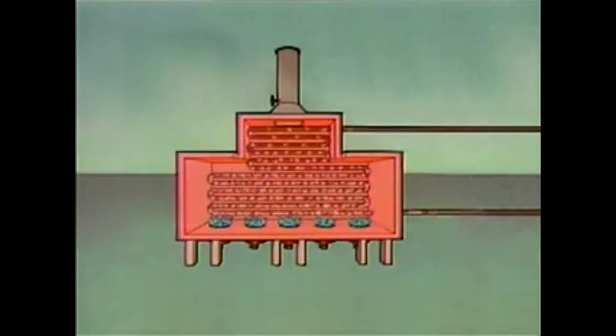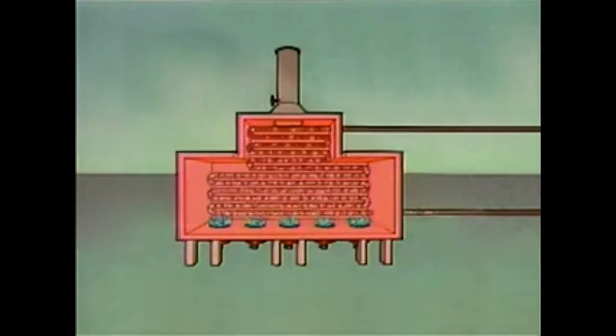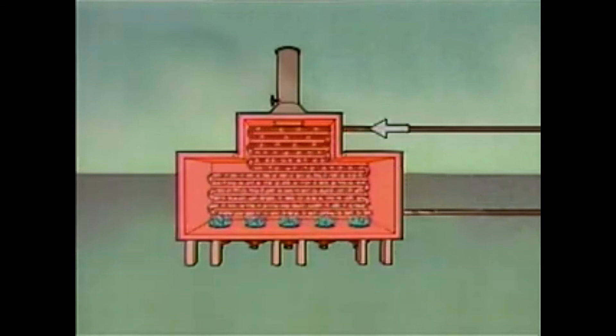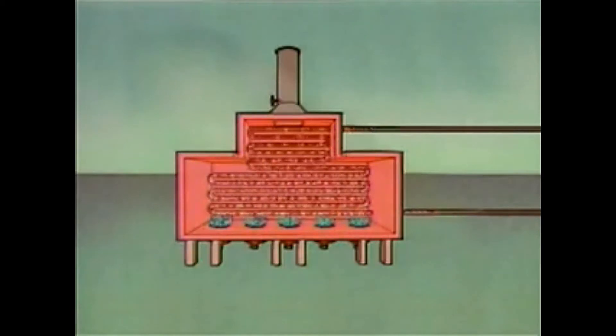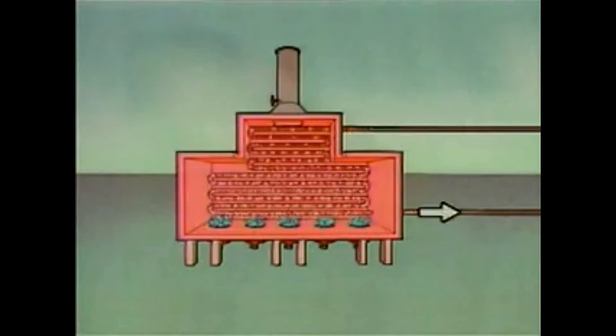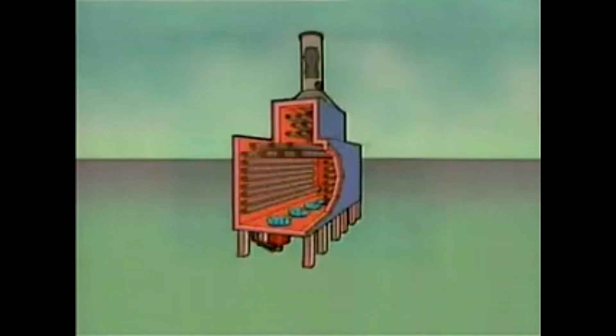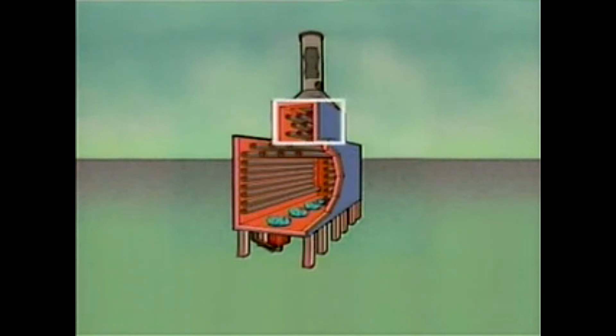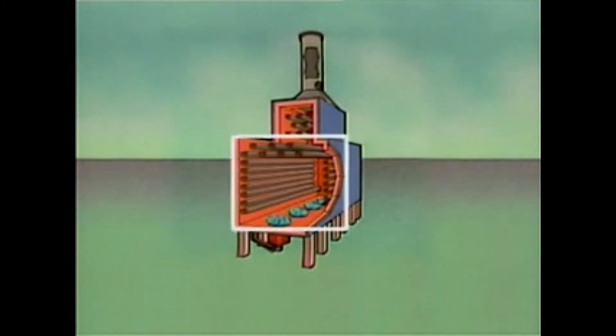Inside this furnace, tubes carry the process fluid through the furnace. The process fluid enters the furnace in the tubes near the stack, passes through the tubes, and leaves near the bottom of the furnace by the burners. The tubes in this furnace are grouped into two major areas: the convection section, which is closer to the stack, and the radiant section, which is closer to the burners.